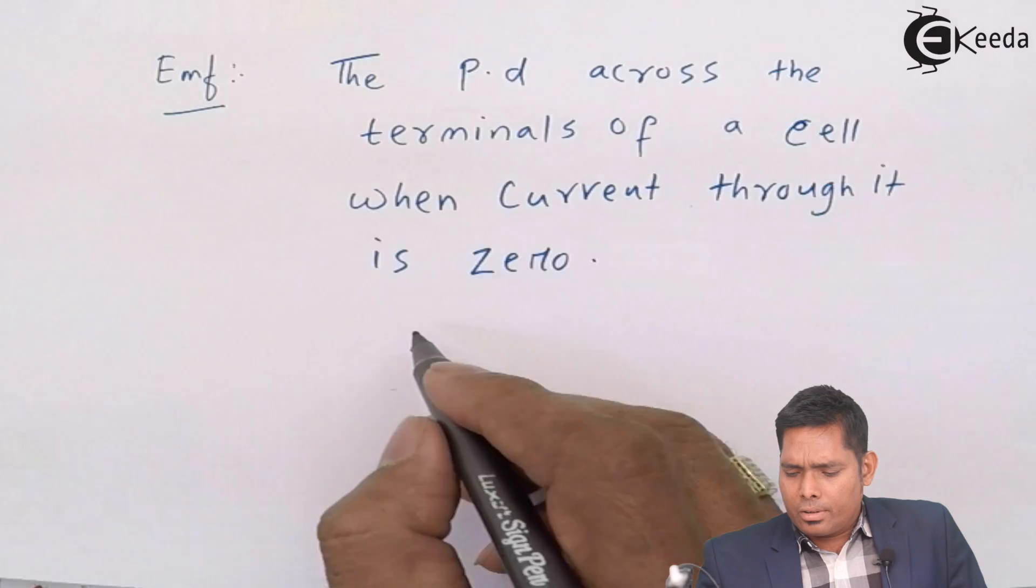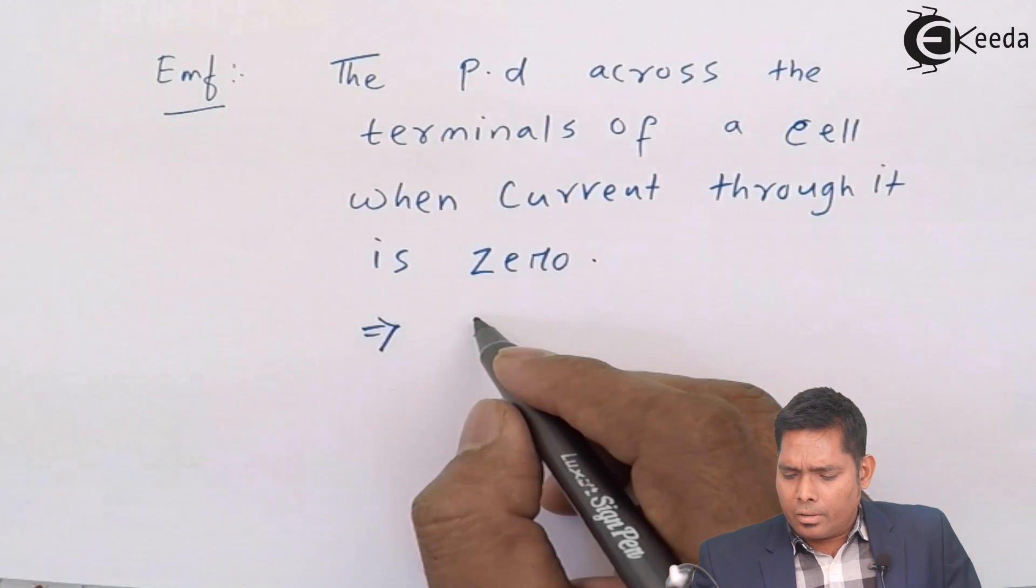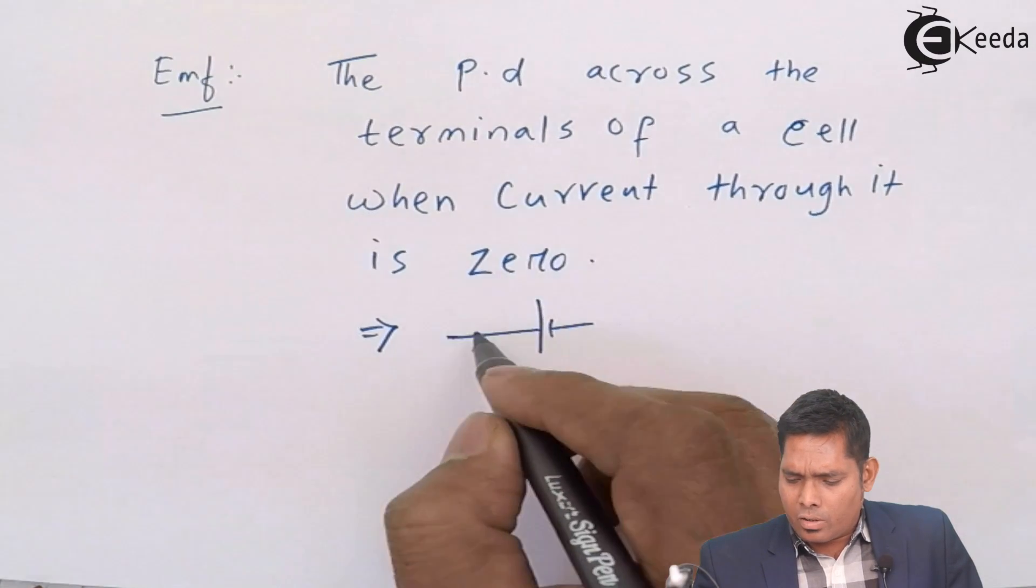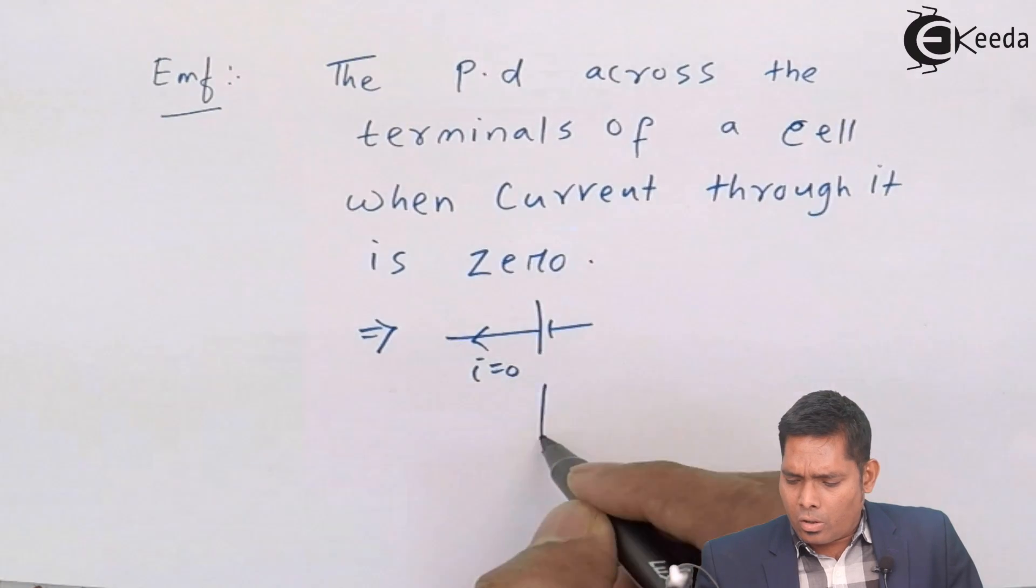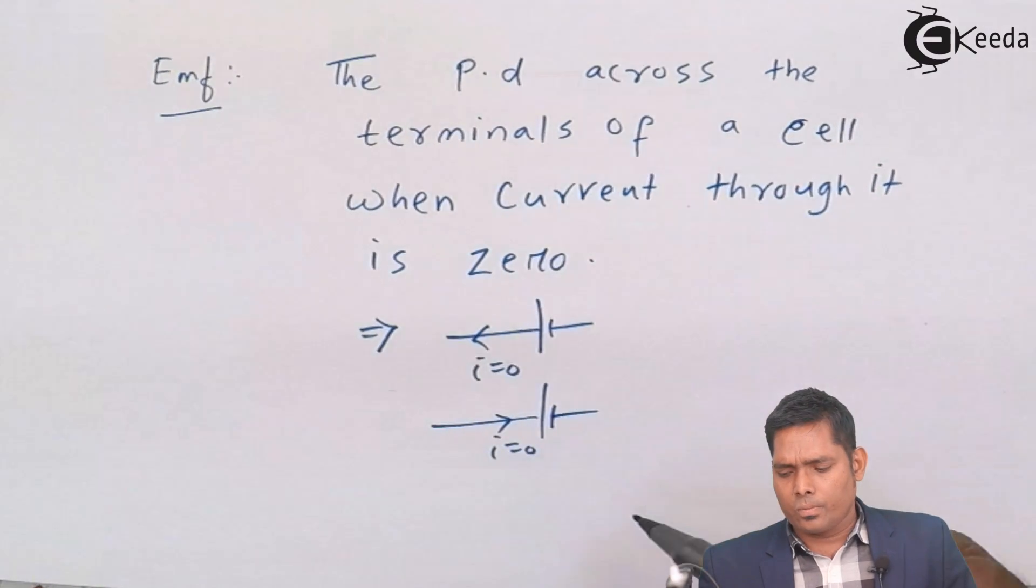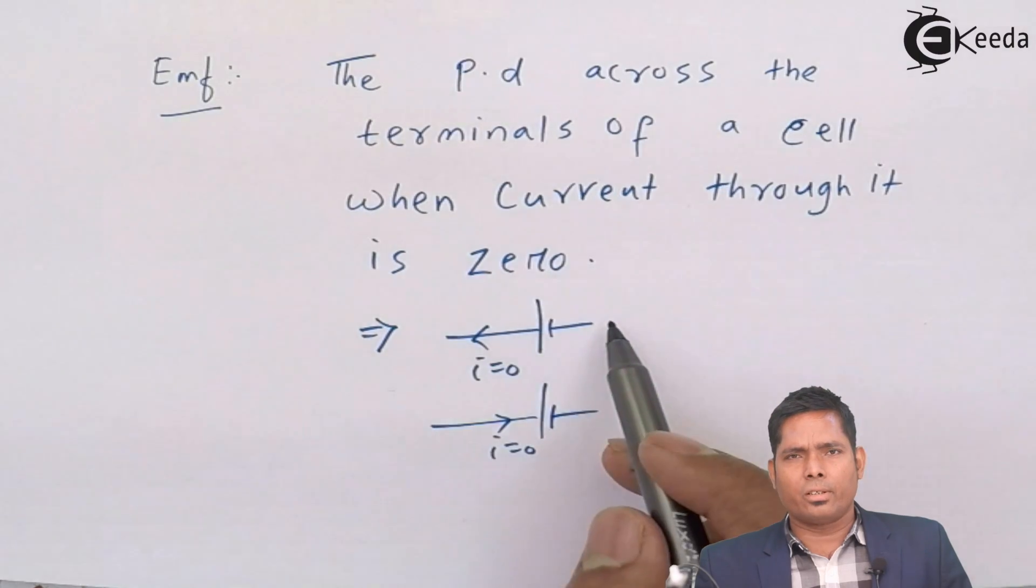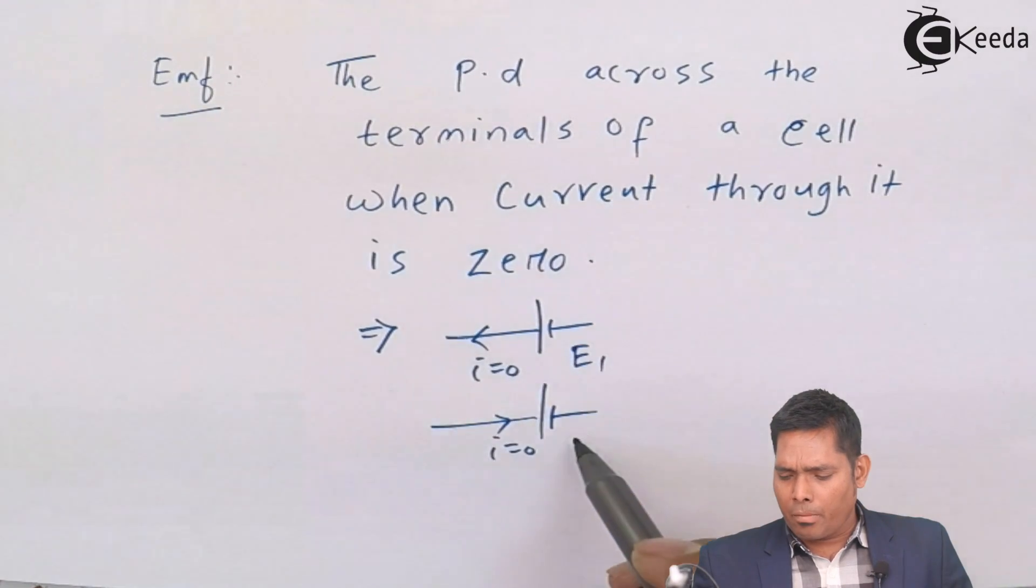Current through it zero means either the battery is not sending current, this is zero. Or the battery is not receiving current, this is zero. No current flows through the battery. Say EMF is E1.